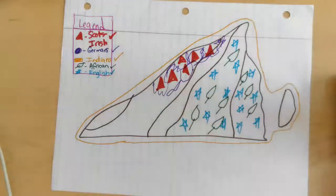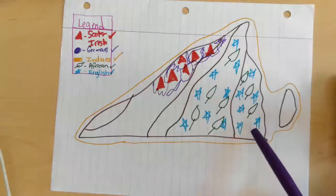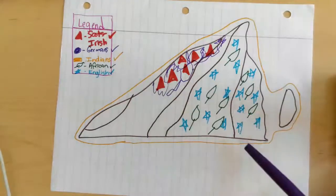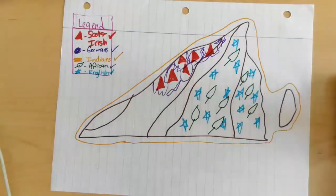So now this map represents the culture of the Indians, the English, the Africans, and then the Germans and the Scots-Irish. Boys and girls, you're going to take a picture of this anchor chart and upload it to your ClassKick page, and then place this in the Virginia studies part of your binder.